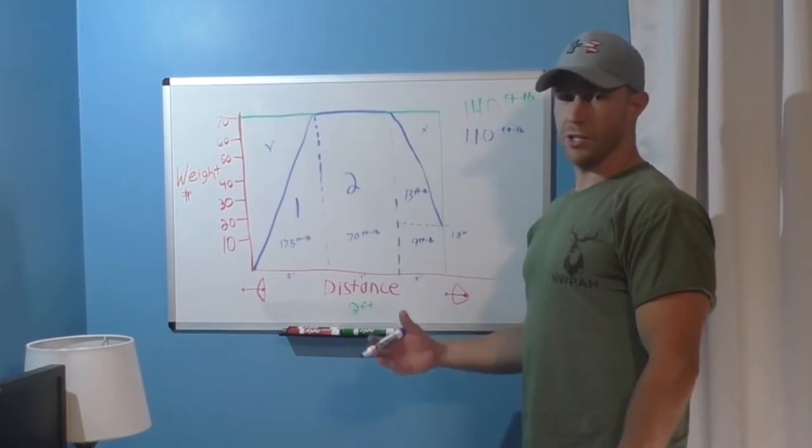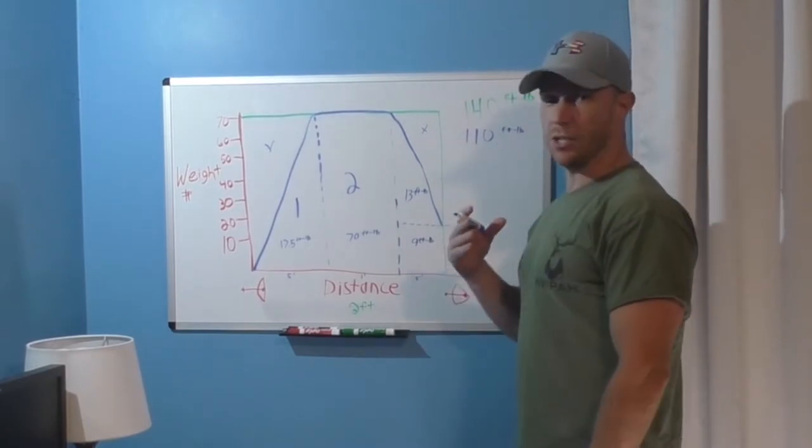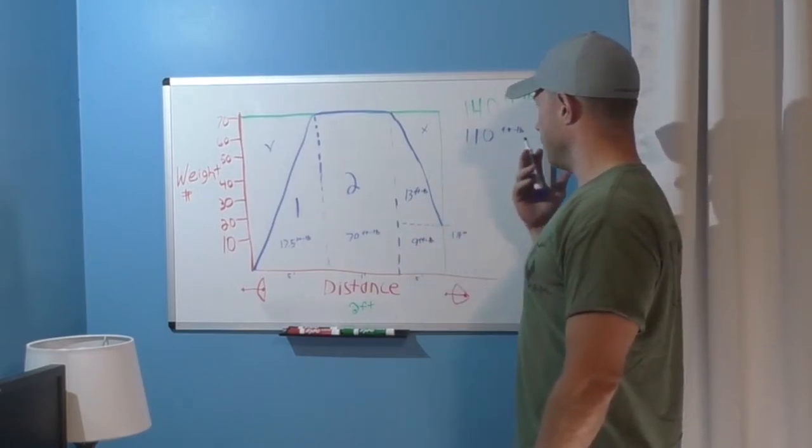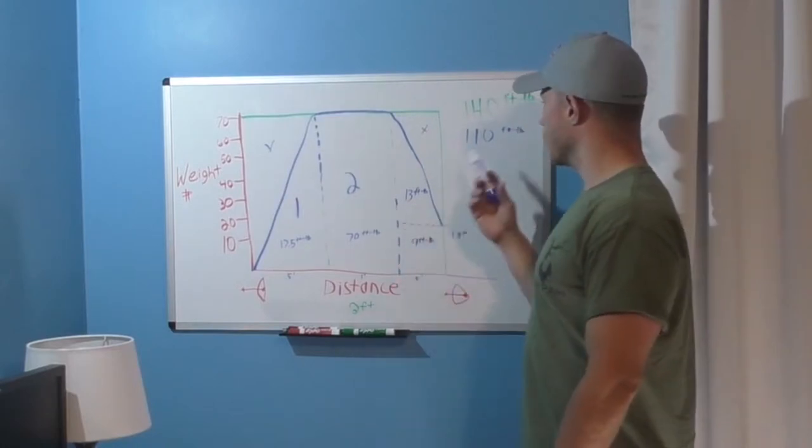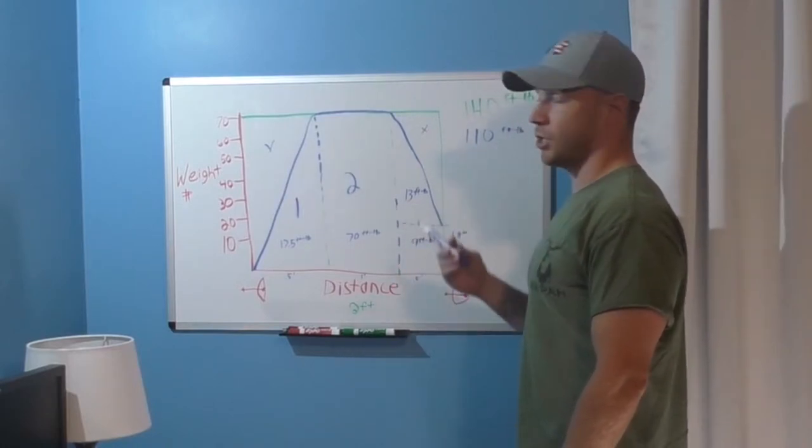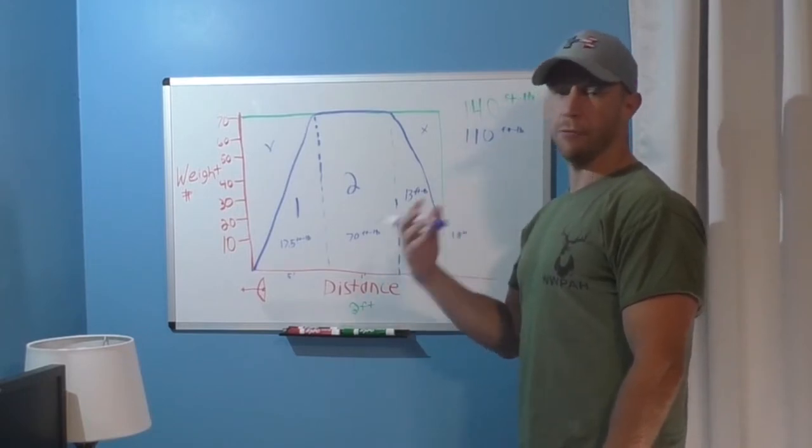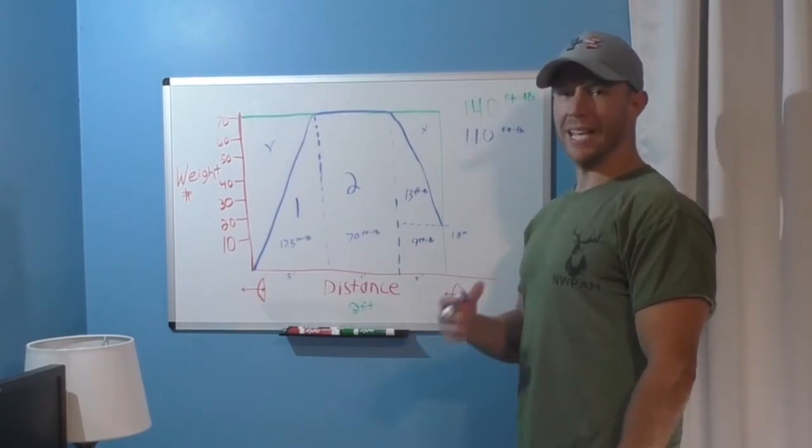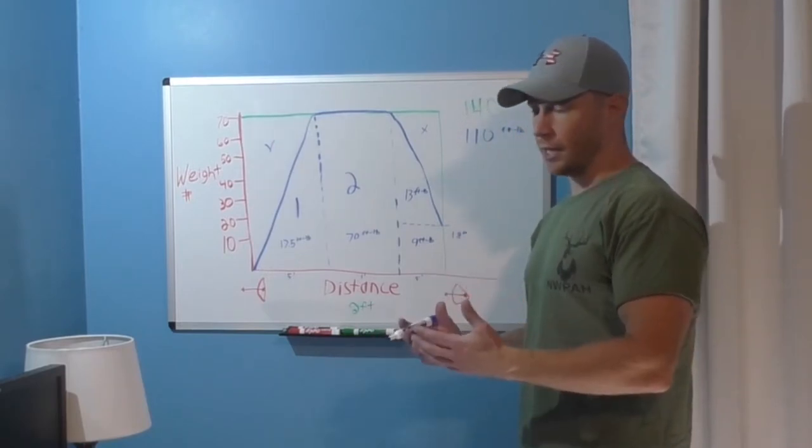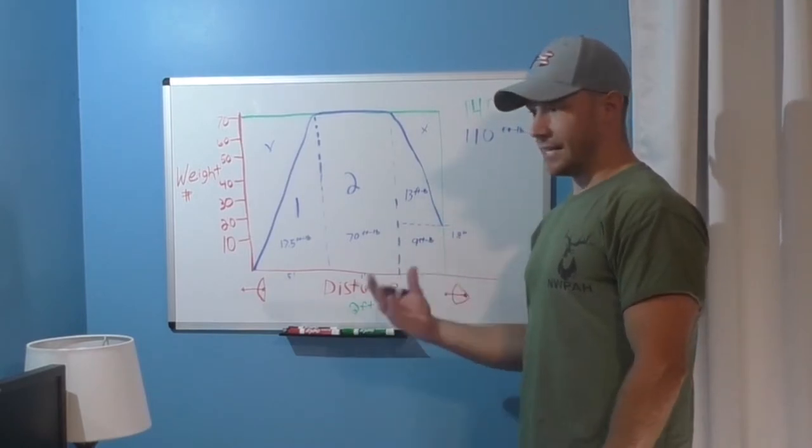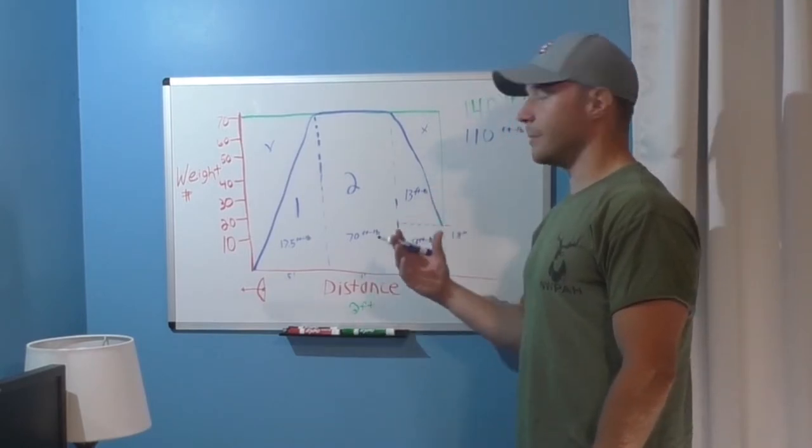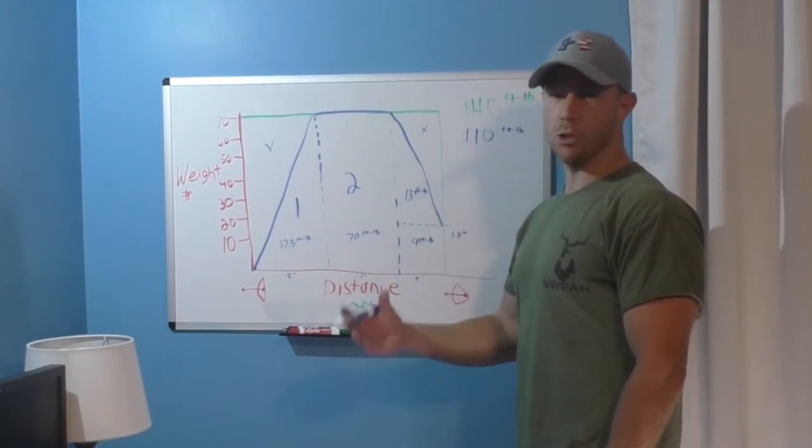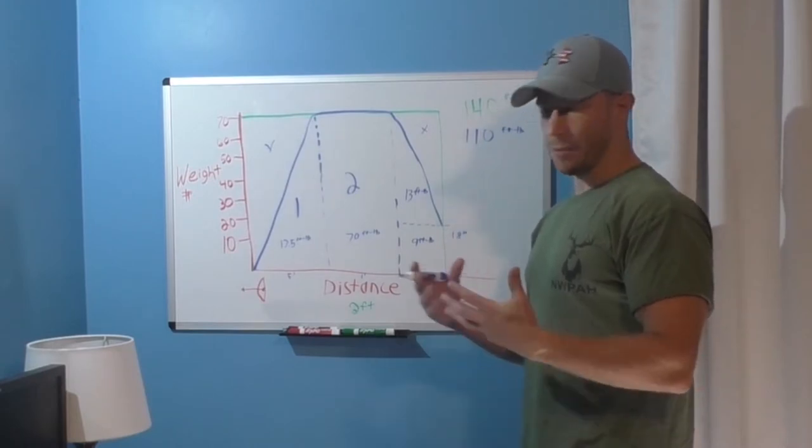Now if you've looked at a bow recently you know that 110 foot pounds is still well above anything you would see on the market. So the question then is if the limbs are able to hold 110 foot pounds worth of energy where does the remaining 30 to 40 foot pounds go? Remember I said earlier that we can't create or destroy energy we can only transfer it from one form to another. Well in this case you're transferring some of that energy into the vibration of the limbs which is going to create sound and heat to a lesser degree and you're going to dissipate that energy that way.